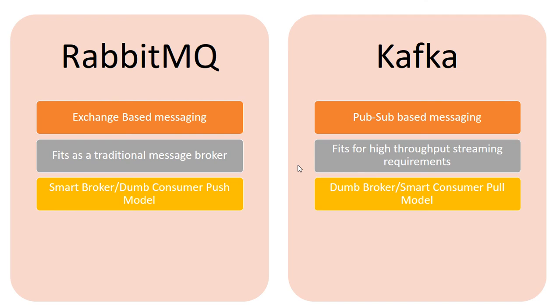Contrary to this, in Kafka we have a dumb broker model where Kafka itself acts dumb and consumer groups are smart. They work on a pull mechanism — they read based on offsets from the partitions available in Kafka, reading all messages as and when needed.